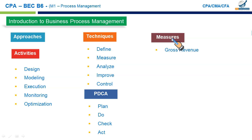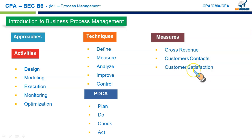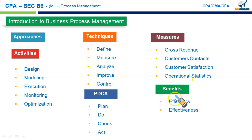These tools help compare expectations and monitor progress. Gross revenue is appropriate for sales-driven organizations. Customer contacts and customer satisfaction measures — using surveys and return rates — are also useful. Operational statistics may include reduction in throughput times, delivery times, and other logistical measures. Business process management also delivers benefits: efficiency (fewer resources used), effectiveness (objectives achieved with greater predictability), and agility (faster, more reliable responses to change).